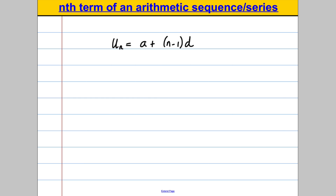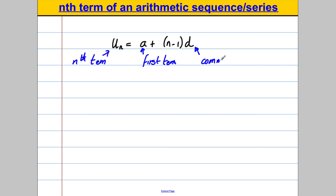Just to make sure we know what each thing stands for: un is the nth term, a is the first term, and d is the common difference — what the sequence or series is going up or down in each time.